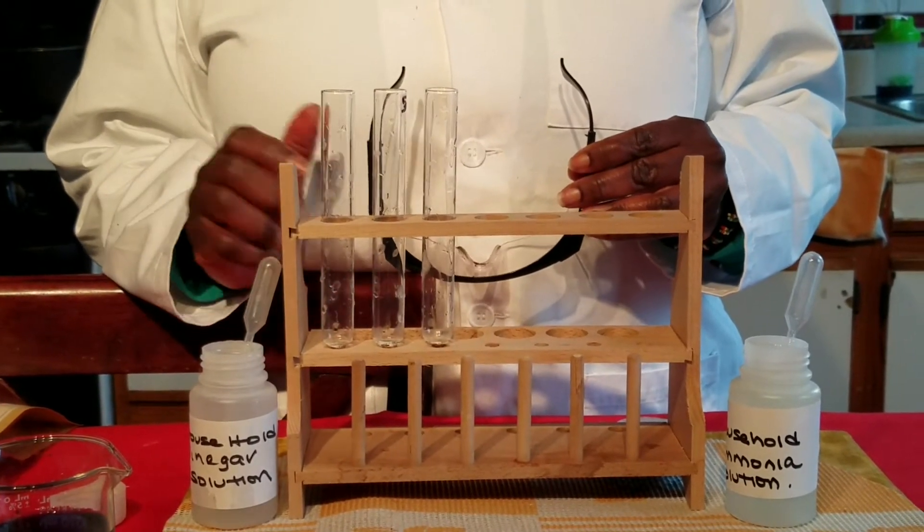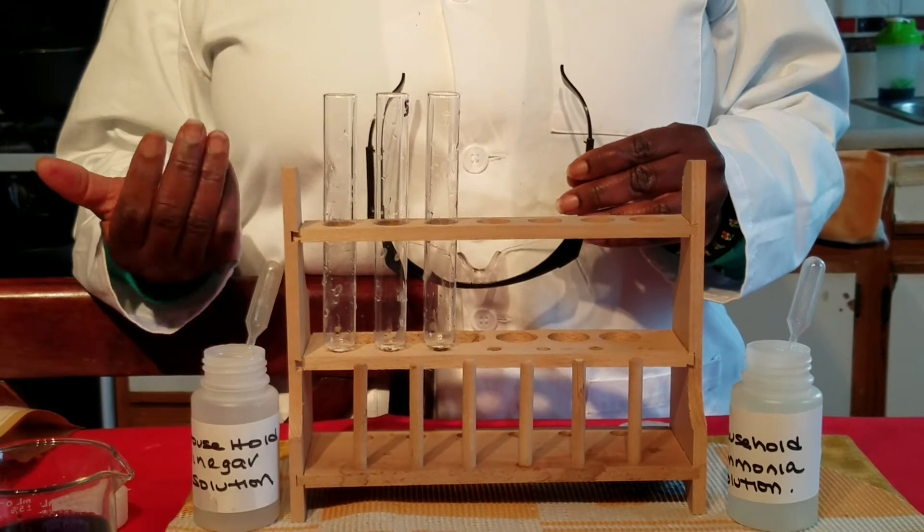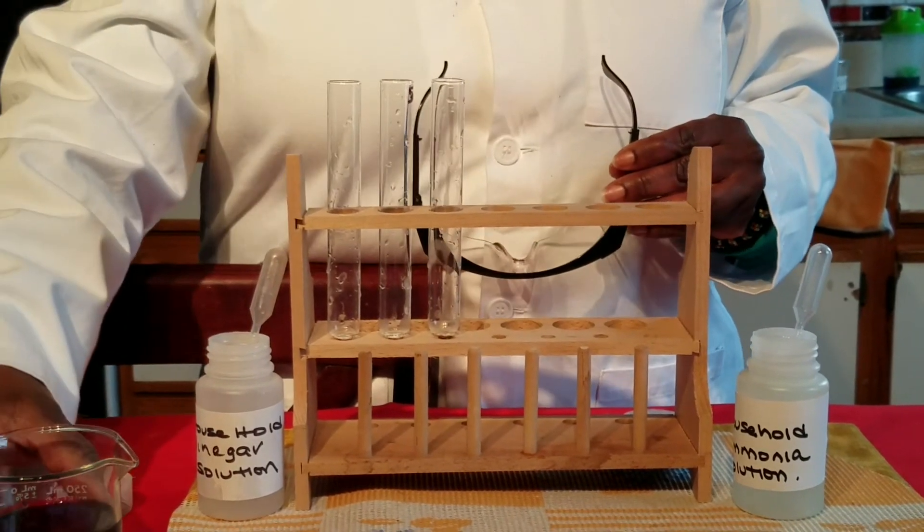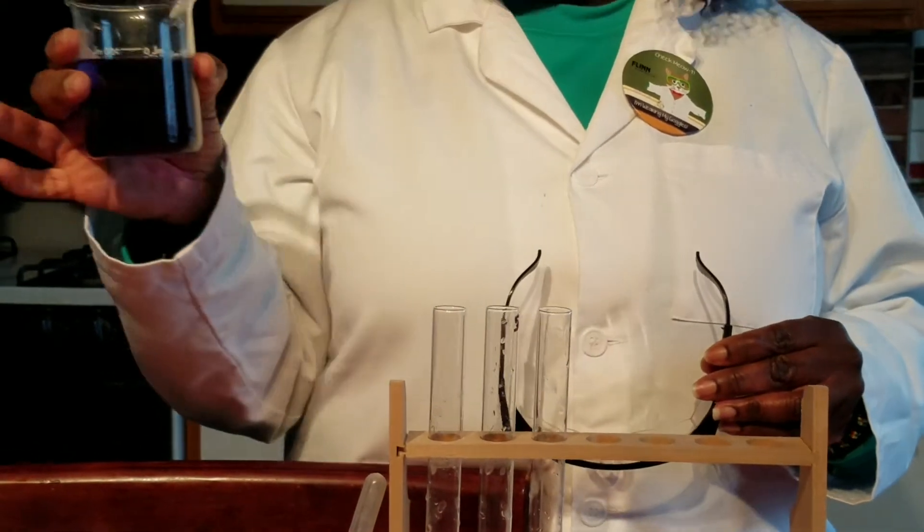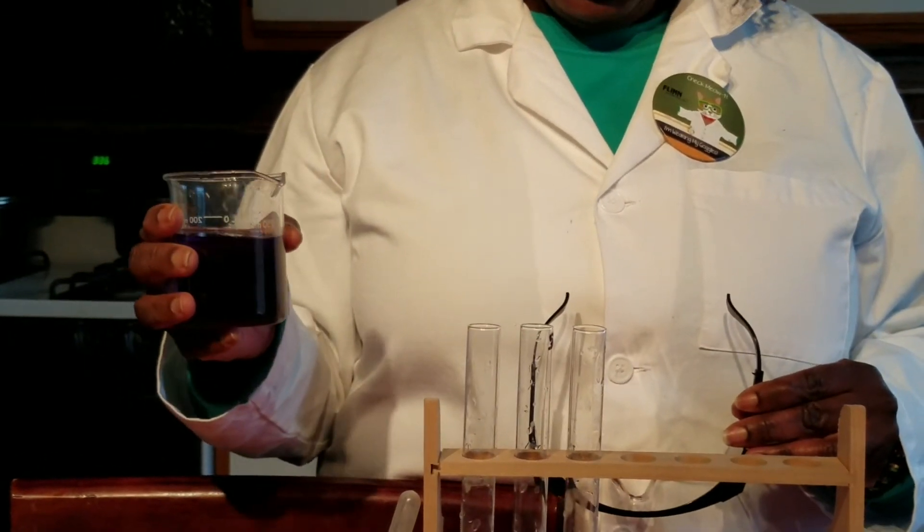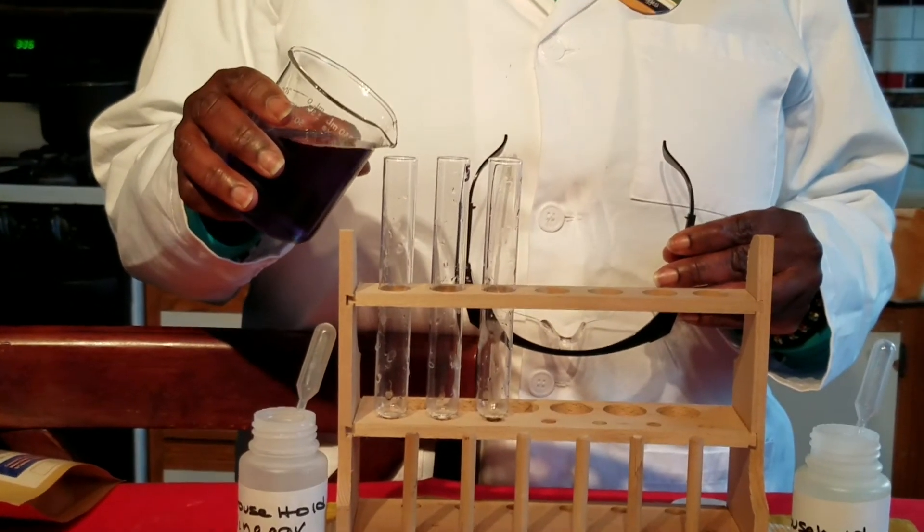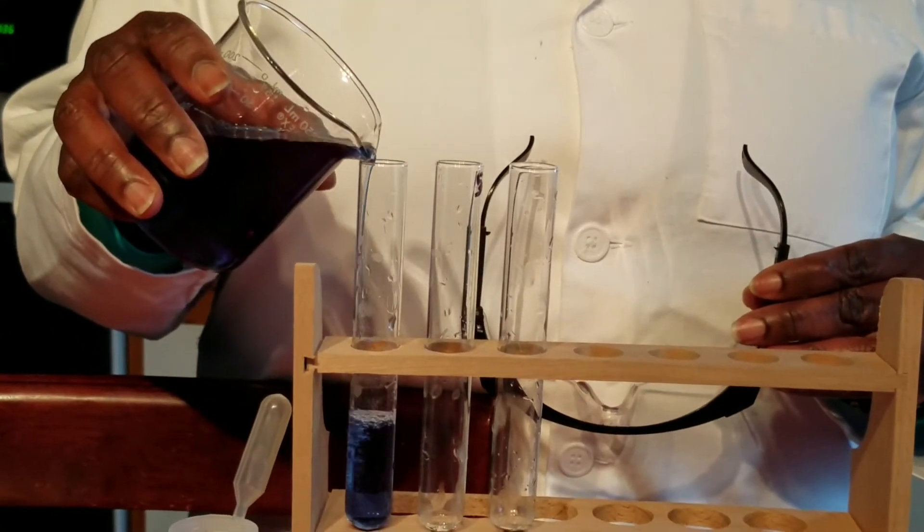So we're going to do the first reaction using tea. Here I brewed some butterfly tea which turns out to be a really pretty color. I'm going to set an equal amount in each of the test tubes.